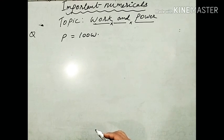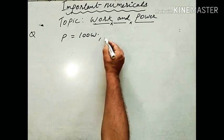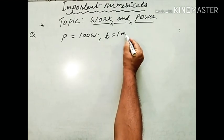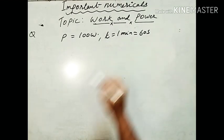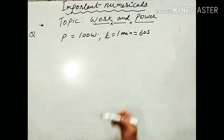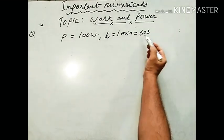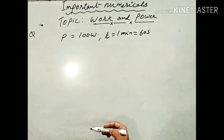50% of the energy supplied to the motor is spent in stirring the water. The time given is 1 minute, which must be converted to 60 seconds.